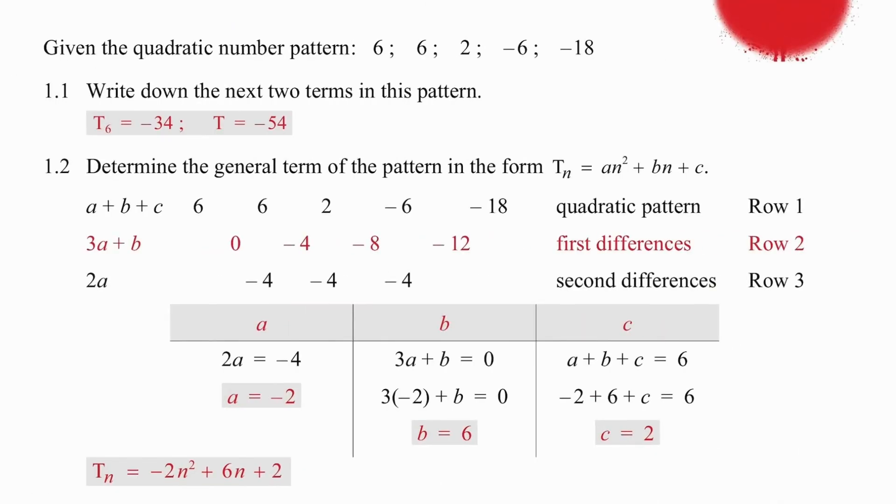So, how did you do? Did you realize that if you worked out the differences between your terms, you would have a zero difference, then minus 4, then minus 8, and then minus 12, and building on that, you would get minus 16, so that your next term would be minus 34, and then you would get minus 20, so that your next term would be minus 54.